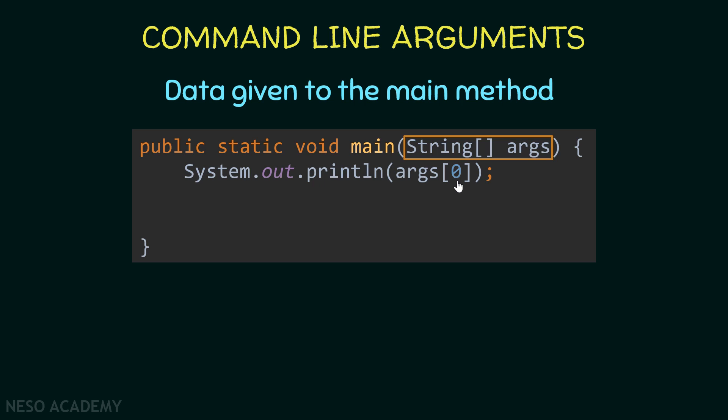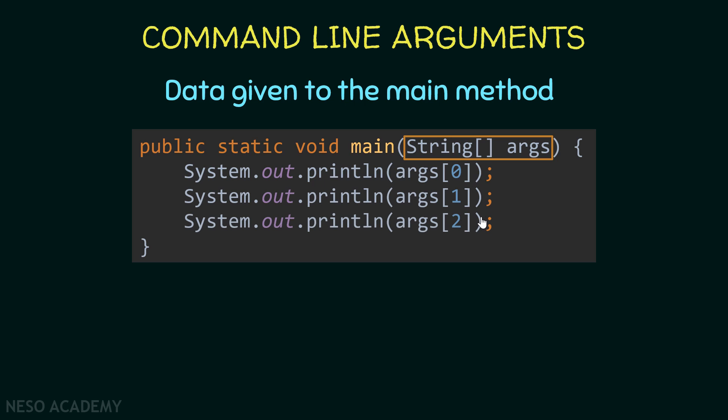The number of the first argument is zero, and we can give as many arguments as we want. Suppose we give three arguments — I'll be able to print the second one and the third one. The number of the second argument is one and the number of the third is two. This may seem a little confusing, but everything will be clear when we see some examples.